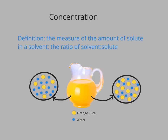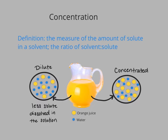While we talk about concentration in a variety of ways in normal everyday vernacular, for chemistry and for our purposes for this unit, we're going to be focusing on the concentration of solutions or homogenous mixtures. In terms of solutions, concentration is the measure of the amount of solute in a solvent, or more simply put, it's the ratio of solute to solvent. We can talk about solutions as either being dilute or concentrated. Dilute solutions simply have less solute dissolved, whereas concentrated solutions have more solute dissolved.